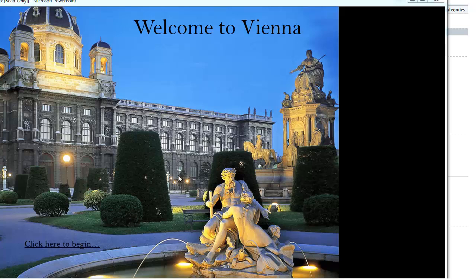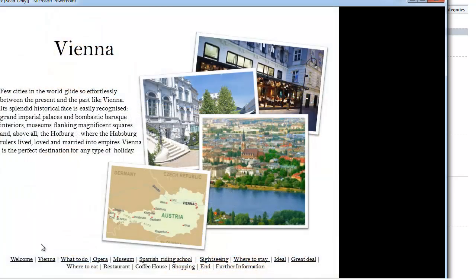In this example, a student has created a guide to Vienna. So what have we got? One very nice big background picture, clear indication of what the site's about — Welcome to Vienna — and an invitation to just click on this hyperlink to begin. And it takes us to an introduction to Vienna.